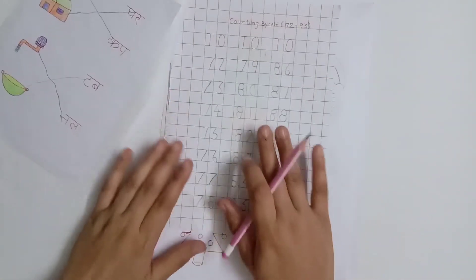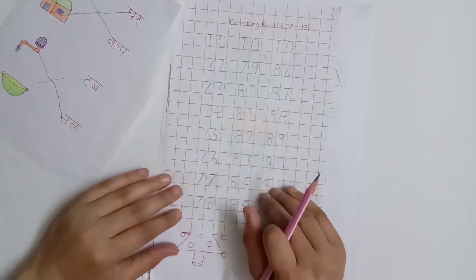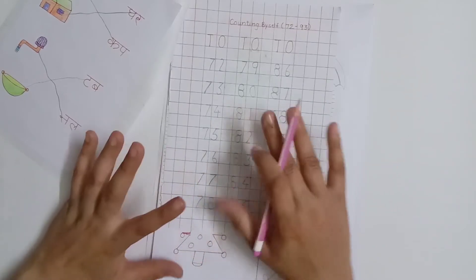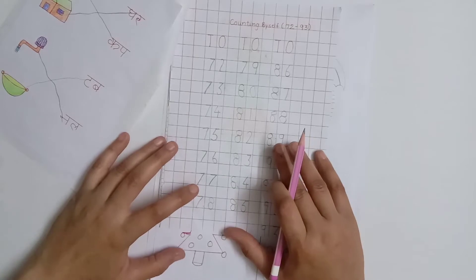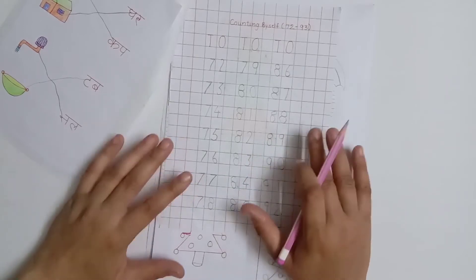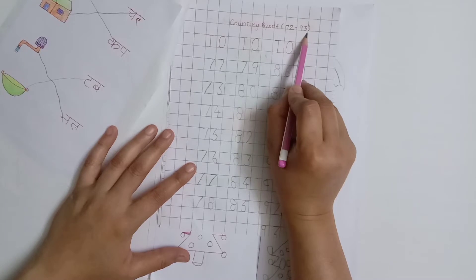After that, our next worksheet is in between counting. In between counting is very useful - where to start and where to stop. So here it's 72 to 93 in between counting.